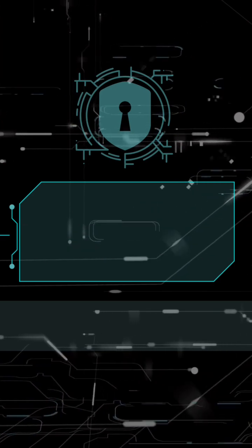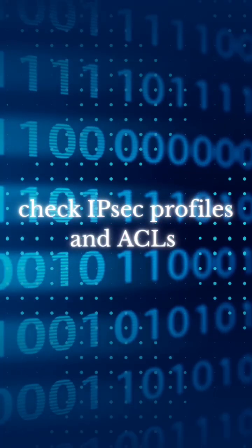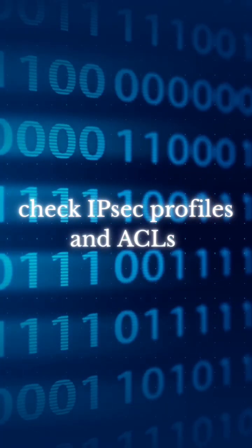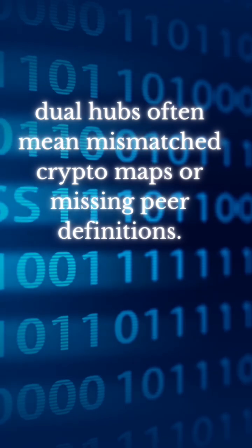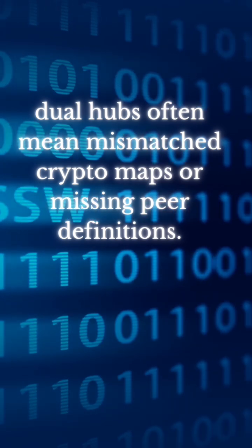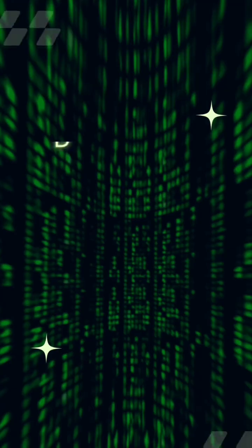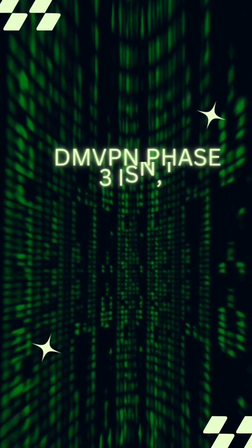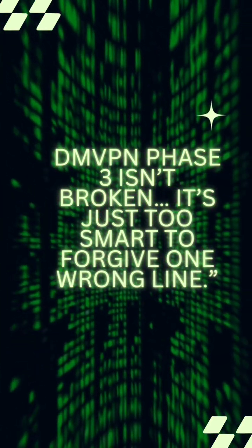Finally, check IPsec profiles and ACLs. Dual hubs often mean mismatched crypto maps or missing peer definitions. DMVPN Phase 3 isn't broken — it's just too smart to forgive one wrong line.